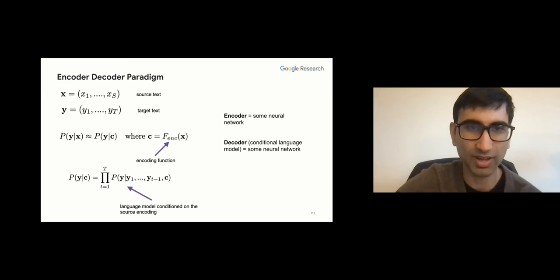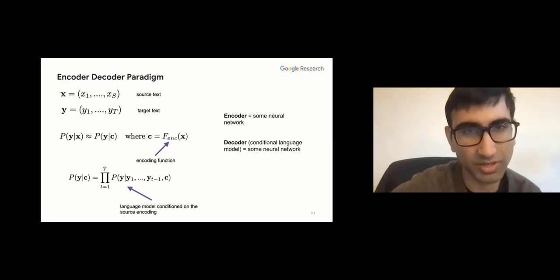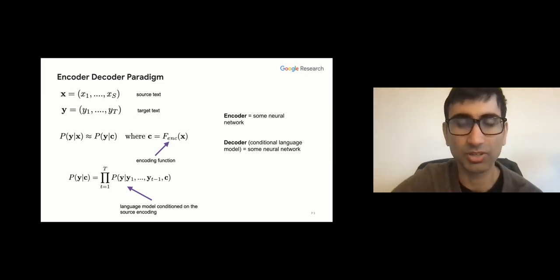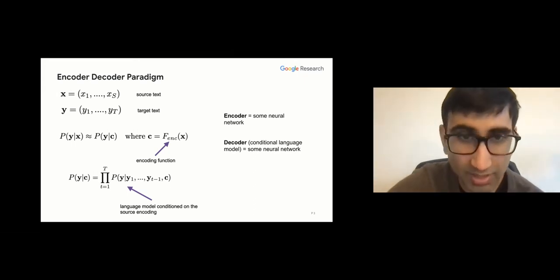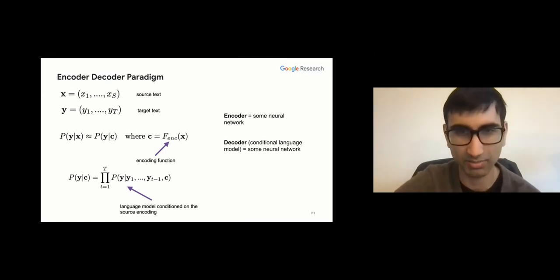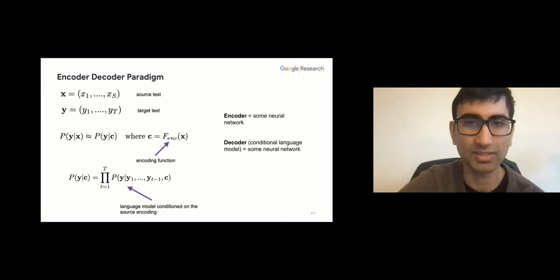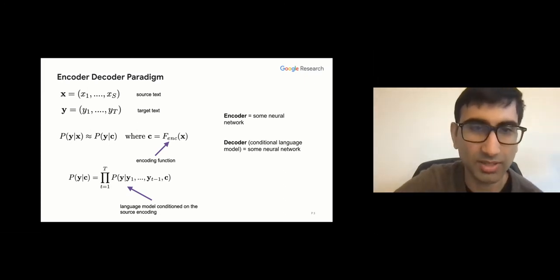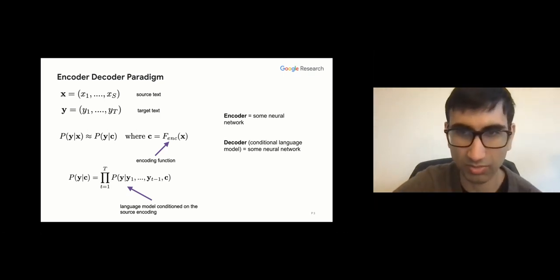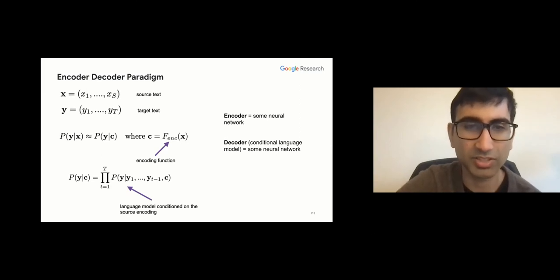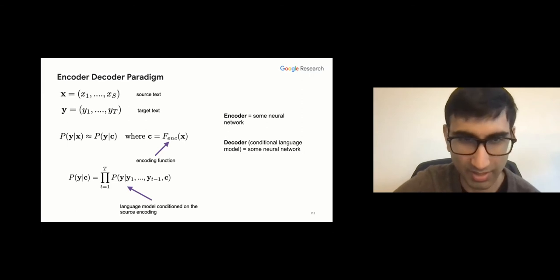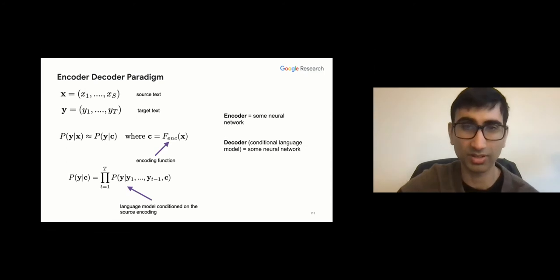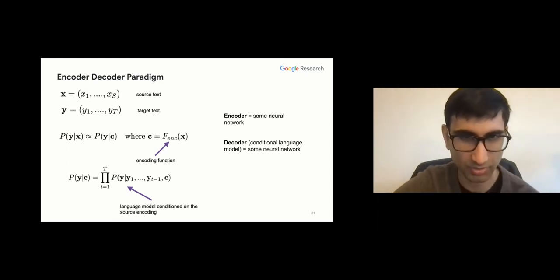The high-level view of how people solve these with neural networks is that you have some encoding function f that encodes x into a set of vectors c. The encoder is some neural network — it could be a recurrent network, a transformer, or attention-based model. Conditioned on this dense representation, you have a conditional language model called the decoder, which given previous tokens of the target and the encoding c, models the next token in the sequence.